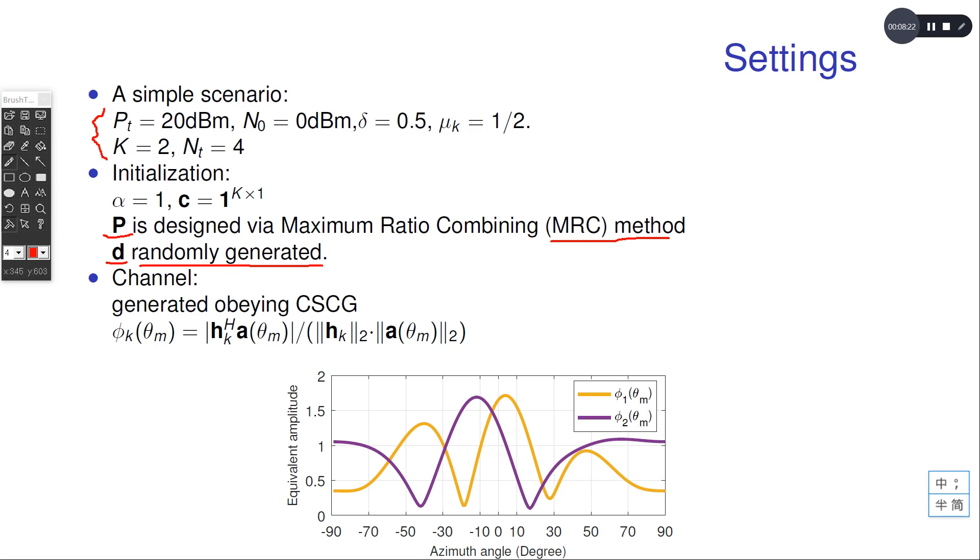The channels of the users are generated obeying the complex Gaussian distribution. We also denote the equivalent amplitude of the channels as follows.